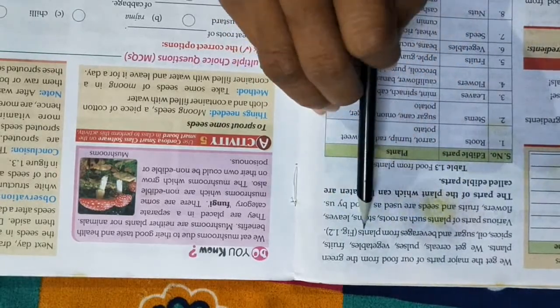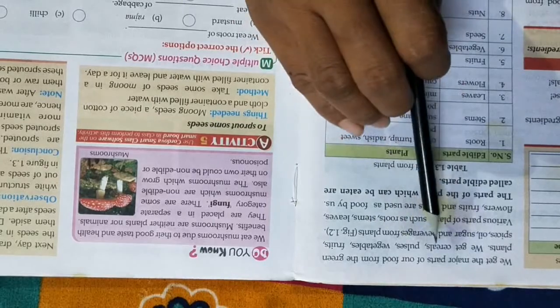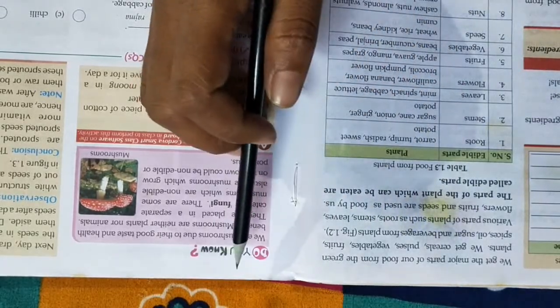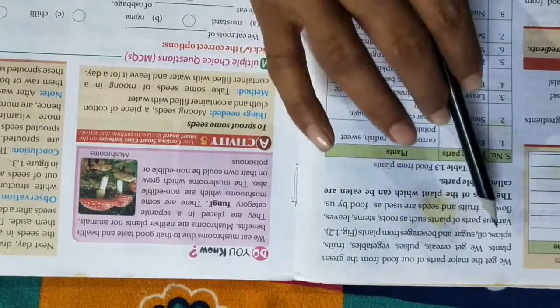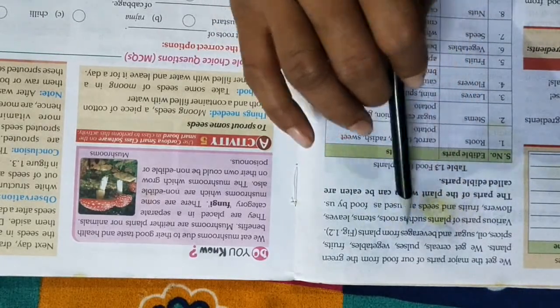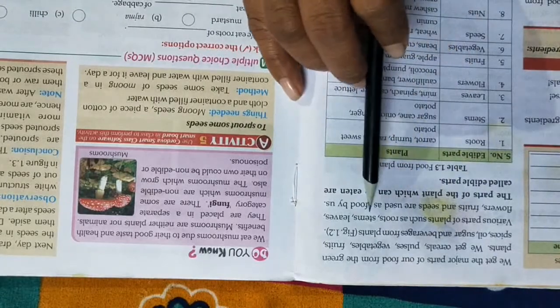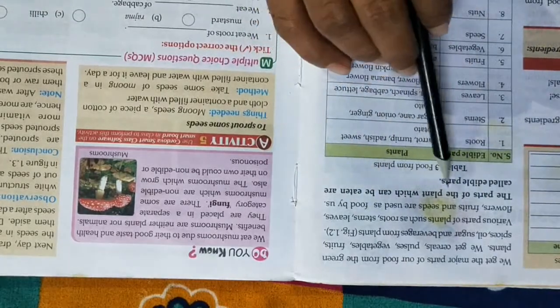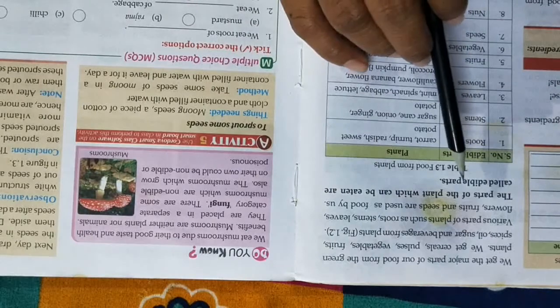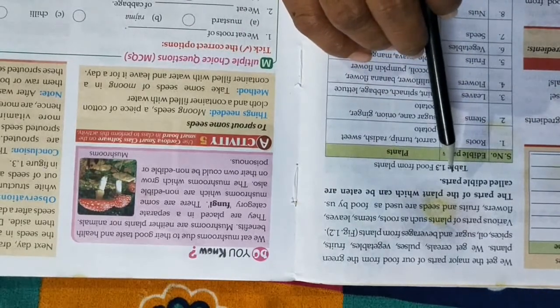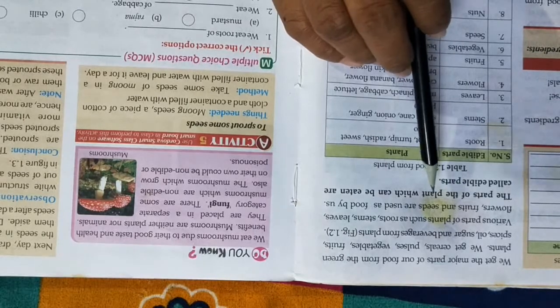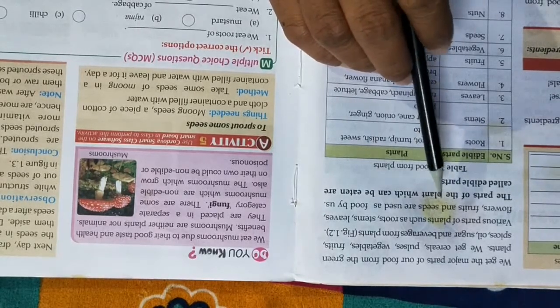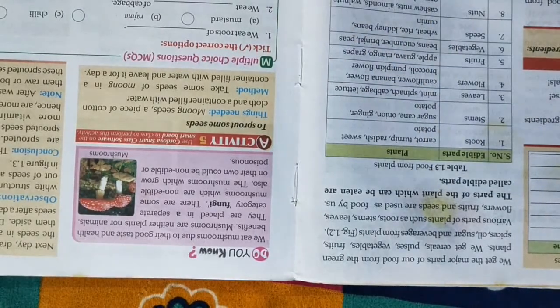We get different types of food sources from plants like cereals, pulses, vegetables, fruits, spices, oil, sugar, and beverages. Various parts of plants such as root, stem, leaves, flowers, fruits, and seeds are used by us.